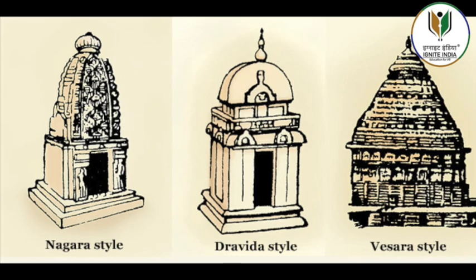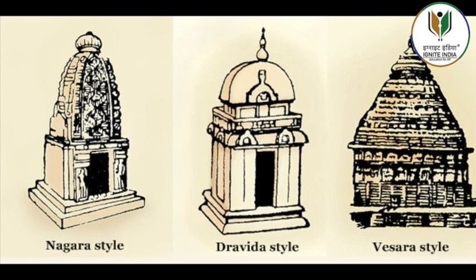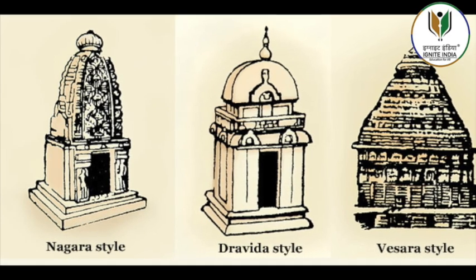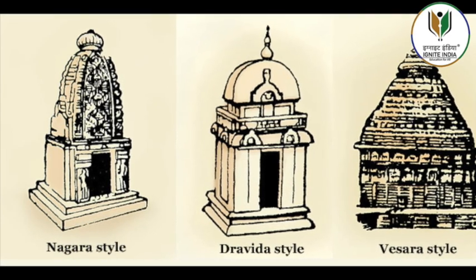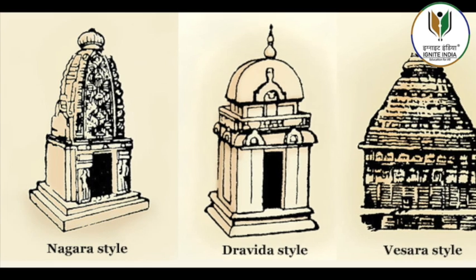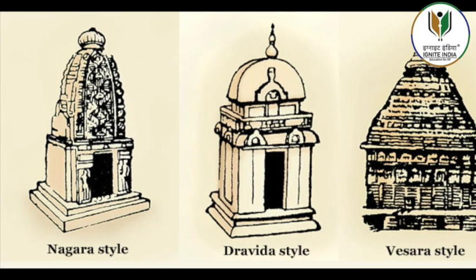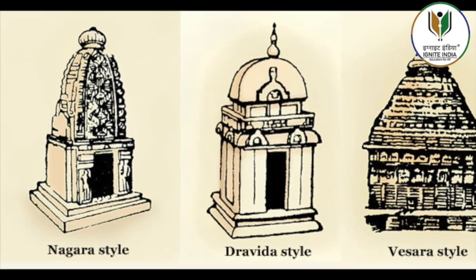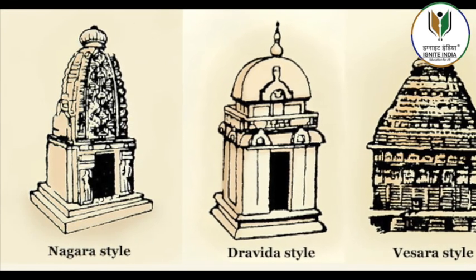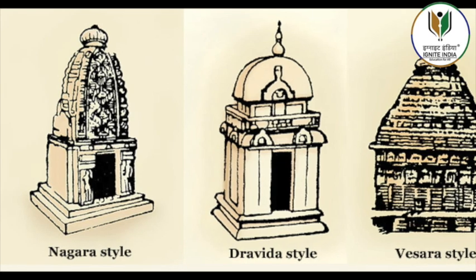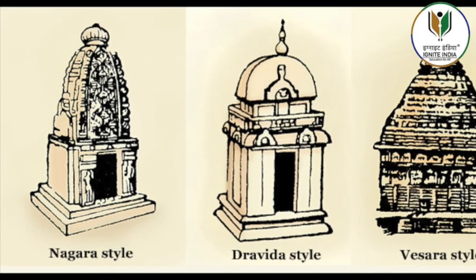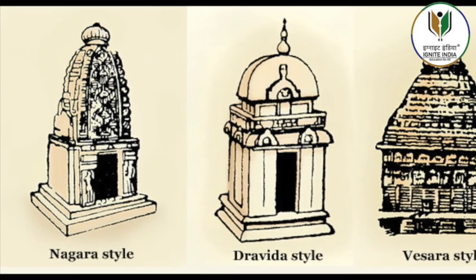In Assam, an old 6th century sculpted door frame from Dah Parveshya near Tezpur and another few stray sculptures from Rangagorati Estate near Tinsukhia in Assam bear witness to the import of the Gupta idiom in that region.